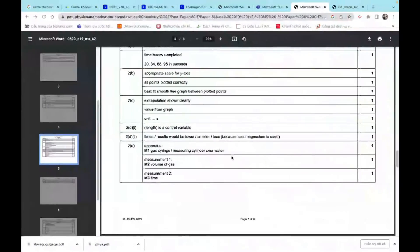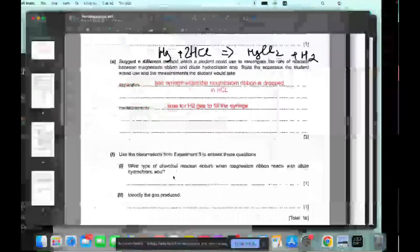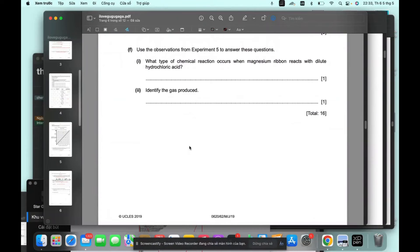How would they, yeah, gas syringe for a long time with mass. Perfect. So how a type of chemical operation occurs when chemical ribbon dilute hydrochloric acid. We just did the reaction to the gas chemical reaction occurs.